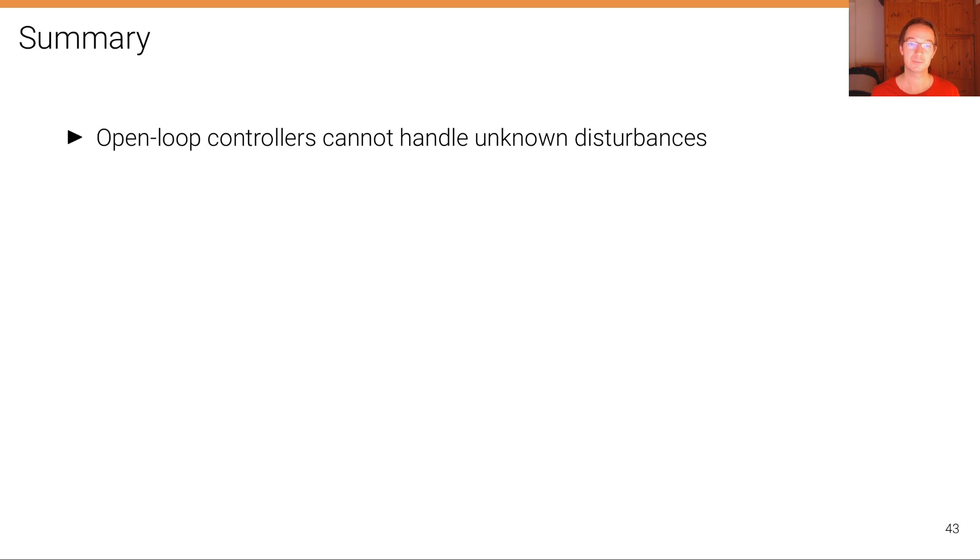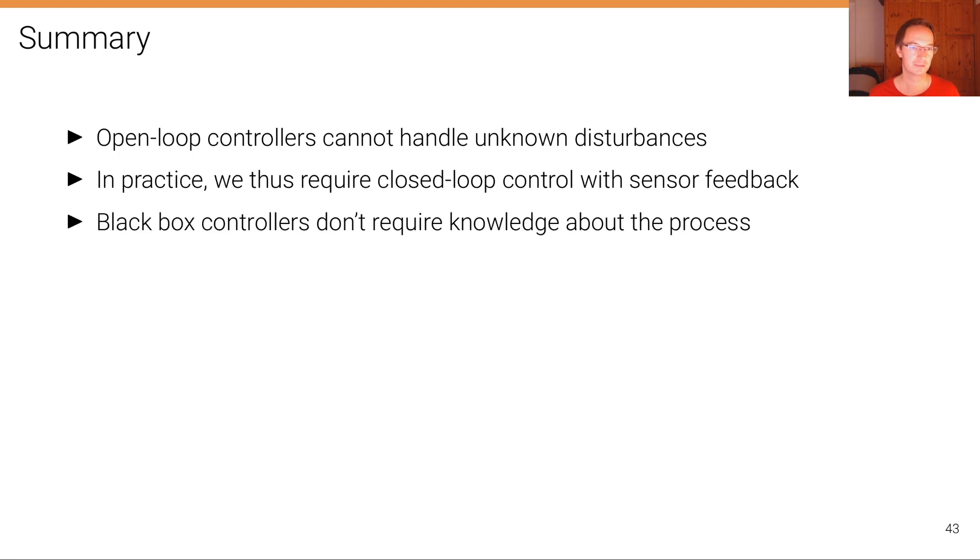In summary, in this lecture we've seen that open-loop controllers cannot handle unknown disturbances. In practice, we therefore require closed-loop controllers with sensory feedback. We've also seen that black-box controllers don't require knowledge about the process, and that the most popular black-box controller is a PID controller.